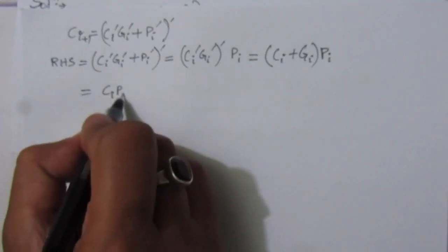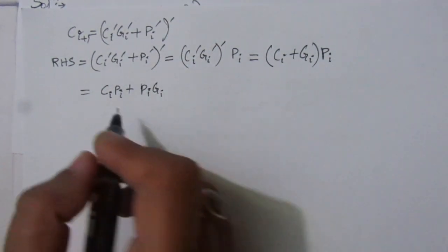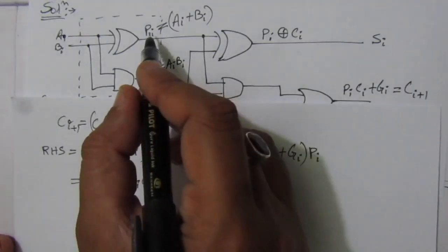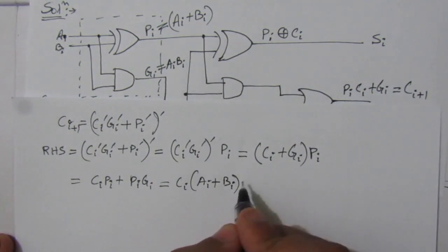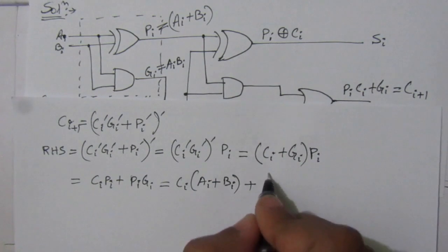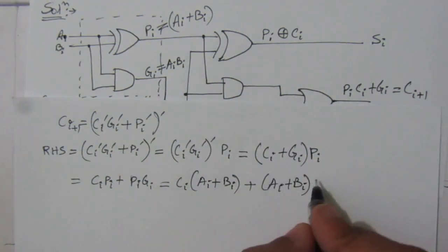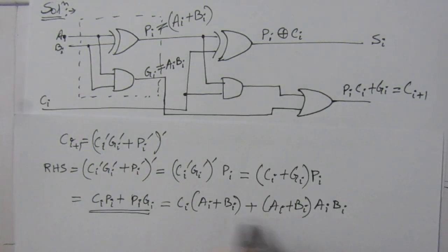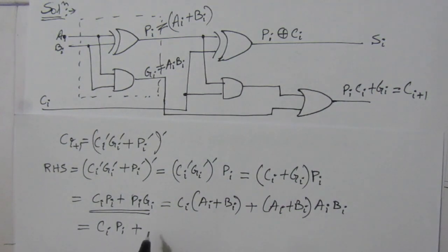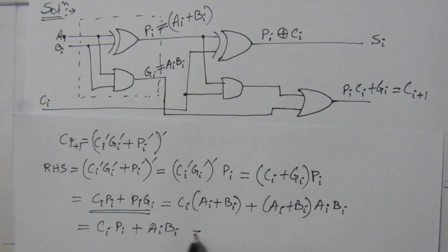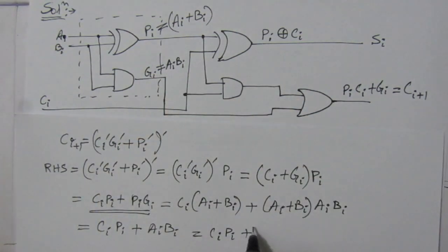We can write it as C_i bar bar plus G_i bar bar, giving C_i plus G_i, whole times P_i. So we get C_i·P_i plus P_i·G_i. Now from the circuit, P_i is A_i plus B_i. So C_i times (A_i plus B_i), giving C_i·A_i plus C_i·B_i, plus (A_i plus B_i) times G_i, which is A_i·B_i. After expanding and simplifying — noting that A_i·B_i plus A_i·B_i reduces — we get C_i·P_i plus G_i, where A_i·B_i is G_i.